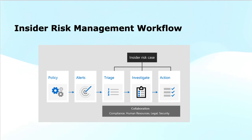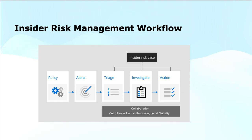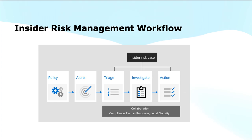Once an alert has been triaged, the investigation starts. This step involves digging deeper into the context and details of the event to understand the behavior of the user or entity involved. Investigators will review activity logs, analyze patterns, check access records and look for any unusual or suspicious behaviors. This helps determine whether the incident is a result of negligence, a mistake or intentional misconduct.